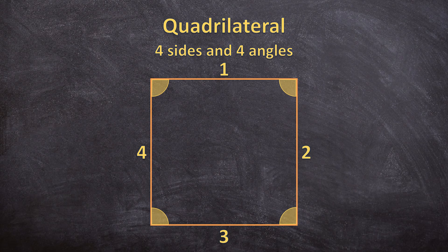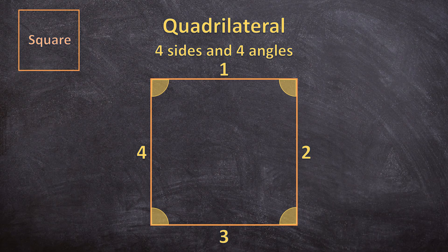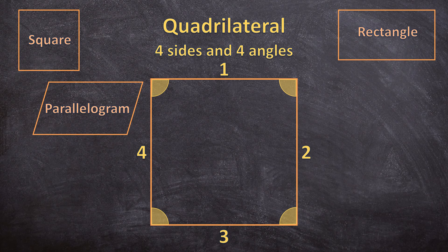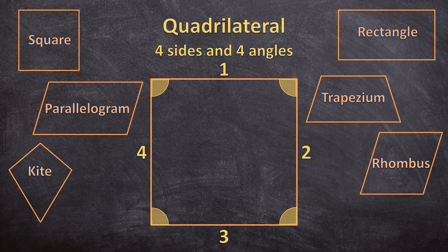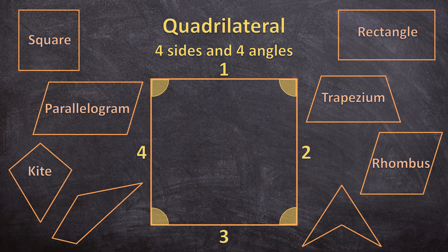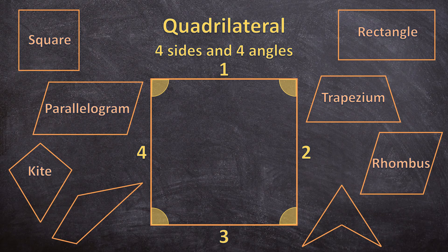So we have a few more specific quadrilaterals. The first one is a square like we said. The second one is a rectangle, a parallelogram, a trapezium, a kite, and a rhombus and there's a few more. But then we also have other types of quadrilaterals without names like these two shapes. But all of these shapes have 4 sides and 4 angles and they are quadrilaterals.